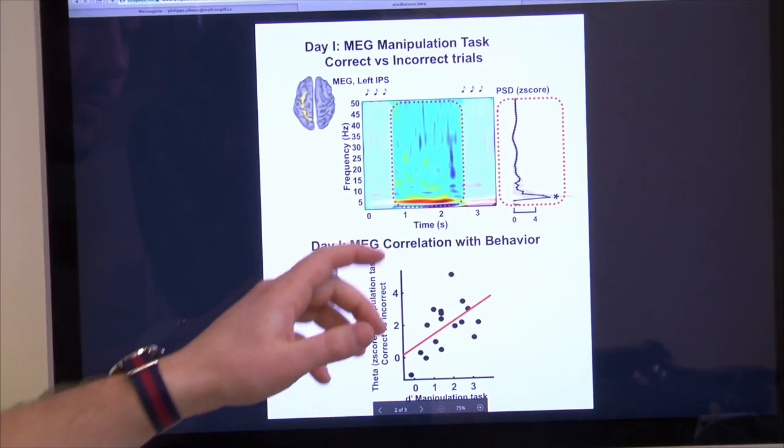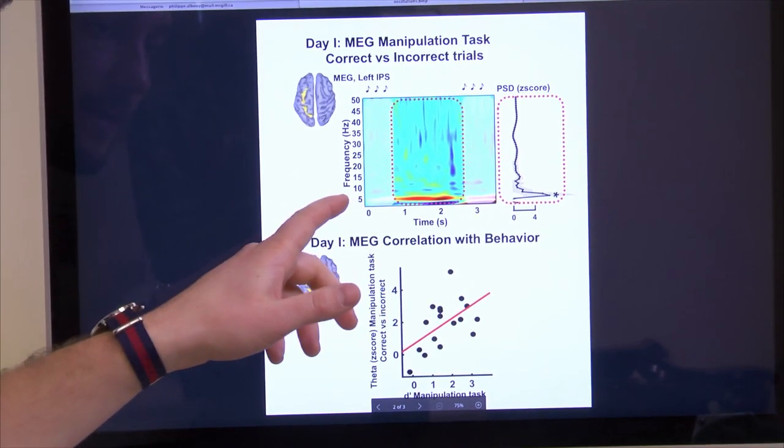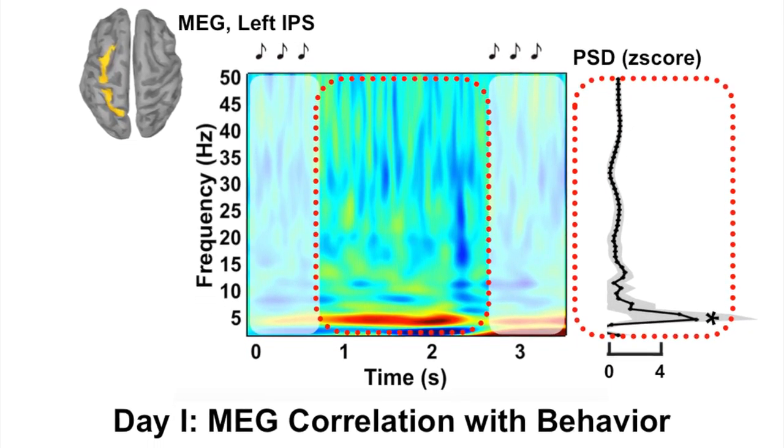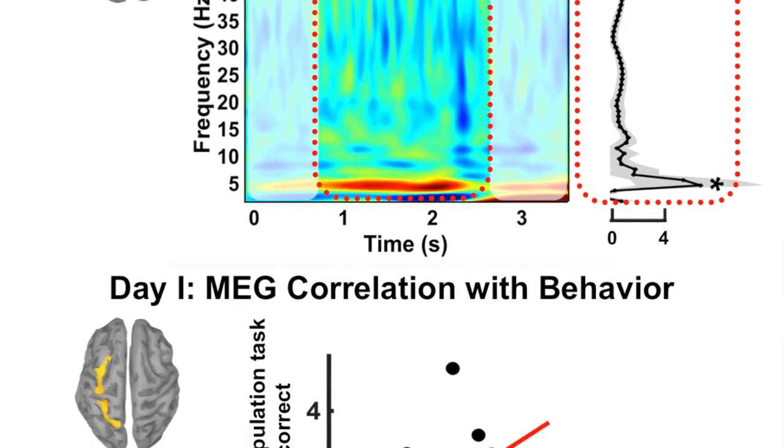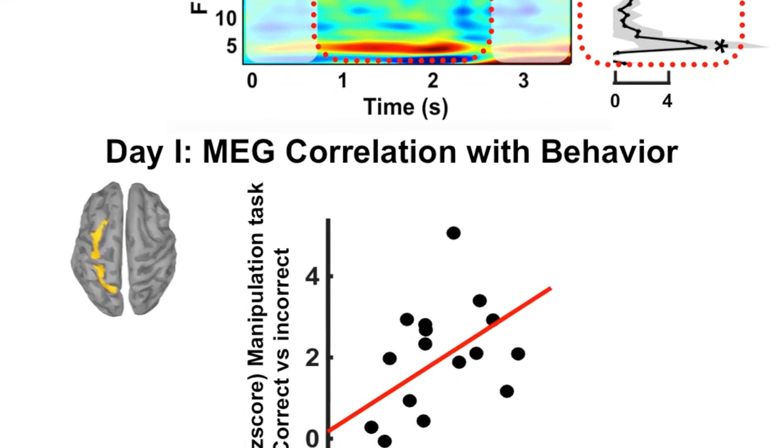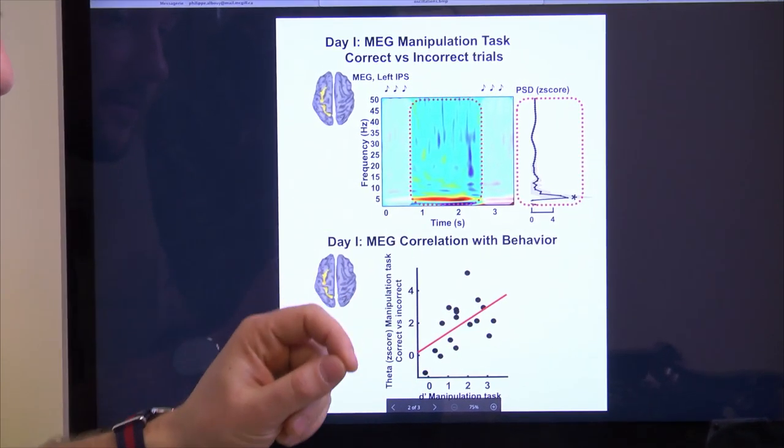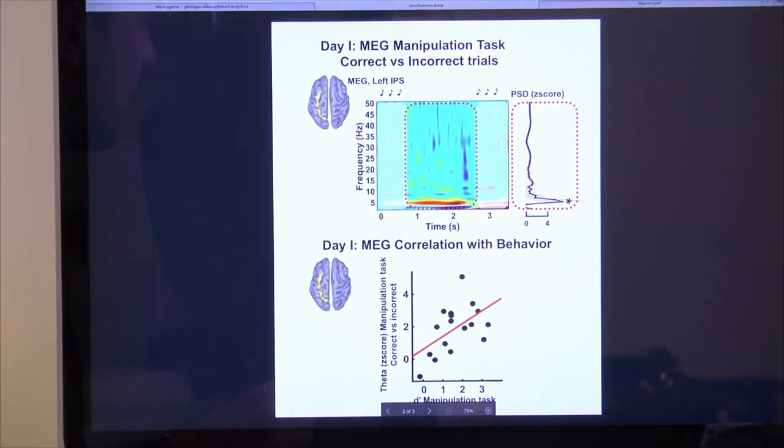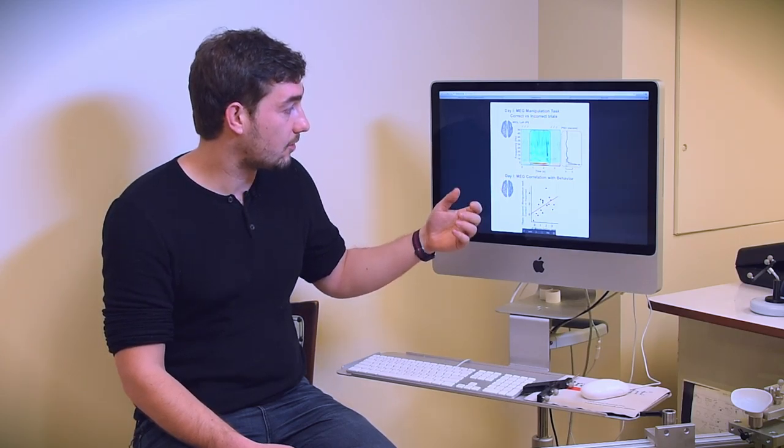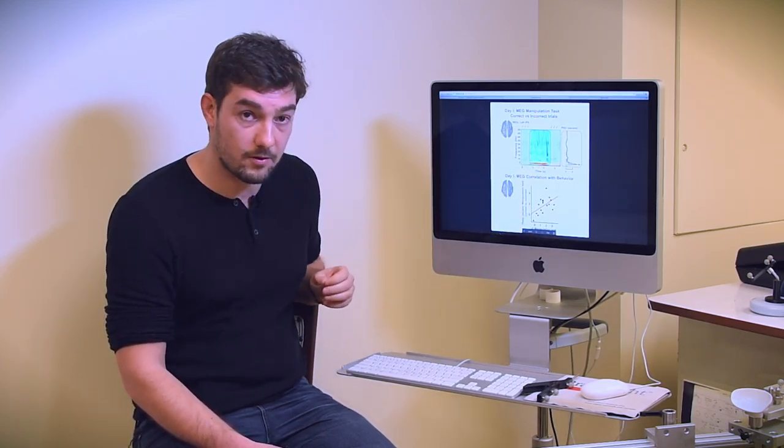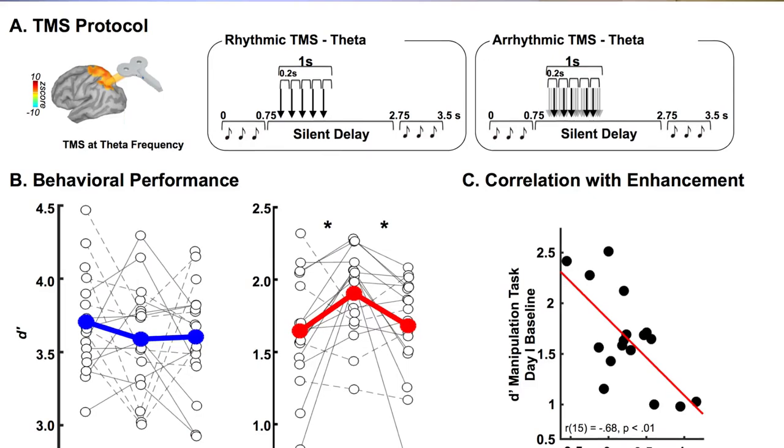So it was a manner of controlling the effects of the stimulation. And here we observed that theta activity, 5 Hz, during the retention period, when you are manipulating information in memory, emerges more in the manipulation task in comparison to the simple task. But what was really interesting is that this theta activity predicts participants' behavioral performance, meaning that the more theta the brain is generating during this retention period, the better the participants are doing the task.